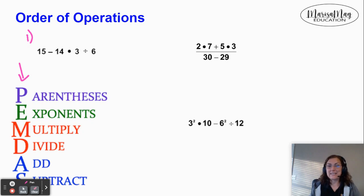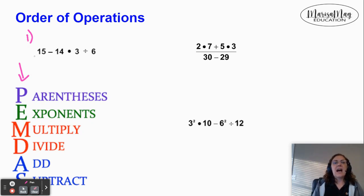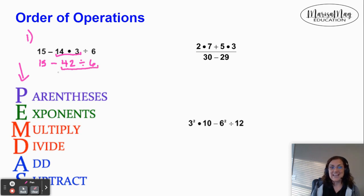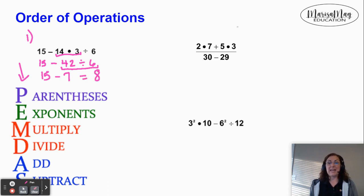Then we look for any exponents. I get to skip that step because I don't see any. Now I'm going to multiply or divide in order from left to right. Starting over here on the left, I come to the multiplication part first. So I'm going to do 14 times 3, which gives me 42. I wrote the 15 minus part ahead of the 42 because I didn't do anything with that yet. Now going through the problem from left to right, I come to the division. So 42 divided by 6 gives me 7. That lets me know I'm done with the multiply or divide step. I finish up by subtracting 15 minus 7 to give me 8.